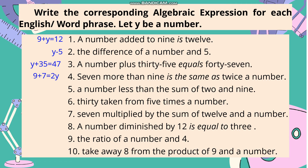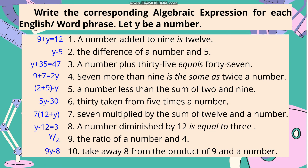Number 5: 'A number less than the sum of 2 and 9.' Answer: (2 plus 9) minus y. Number 6: '30 taken from 5 times a number.' Answer: 5y minus 30. Number 7: '7 multiplied by the sum of 12 and a number.' Answer: 7 times (12 plus y). Number 8: 'A number diminished by 12 is equal to 3.' Answer: y minus 12 equals 3. Number 9: 'The ratio of a number and 4.' Answer: y over 4. Number 10: 'Take away 8 from the product of 9 and a number.' Answer: 9y minus 8.